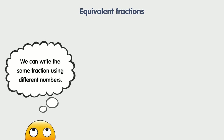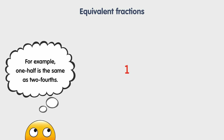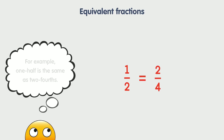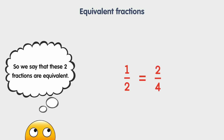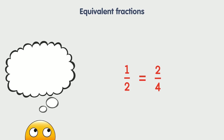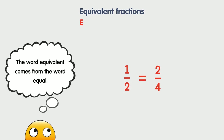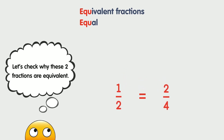We can write the same fraction using different numbers. For example, one half is the same as two fourths. So we say that these two fractions are equivalent because they are the same. The word equivalent comes from the word equal. Let's check why these two fractions are equivalent.